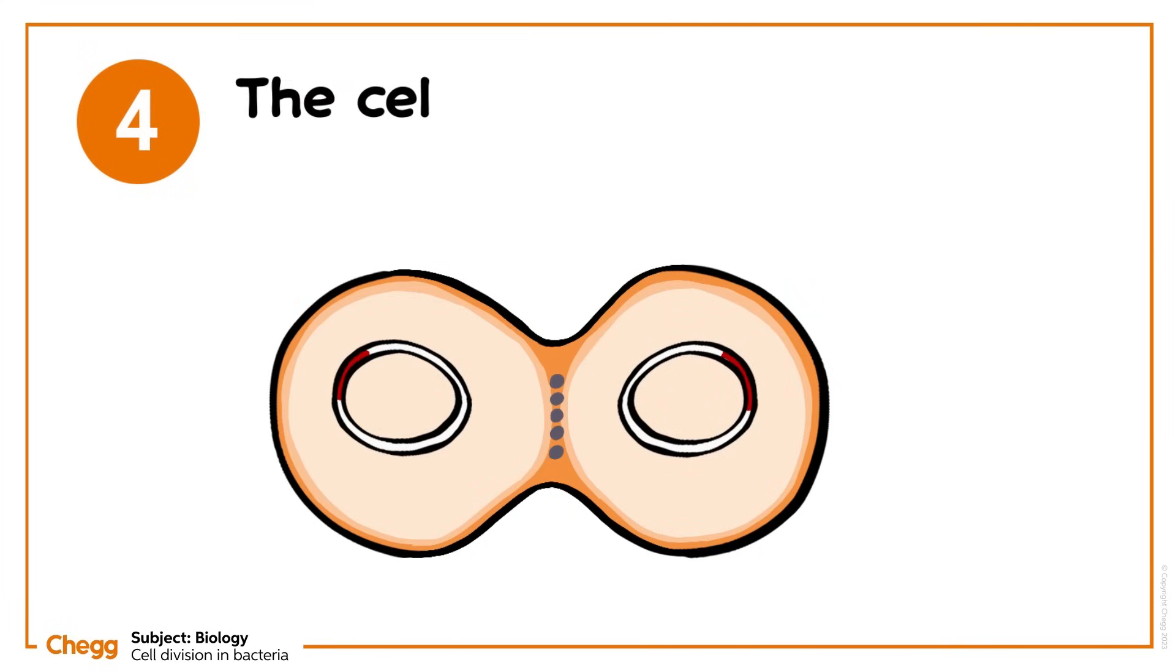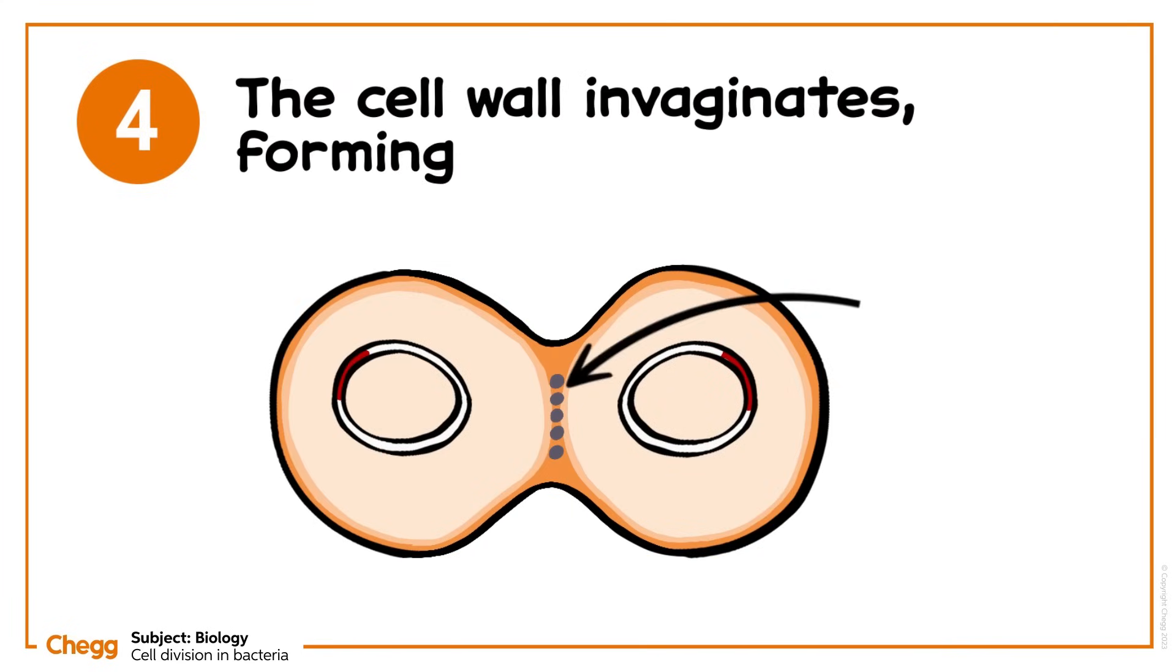Step 4. The cell wall invaginates, forming a septum, or wall that divides the cell.